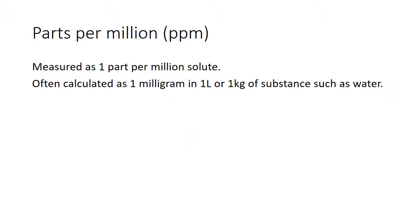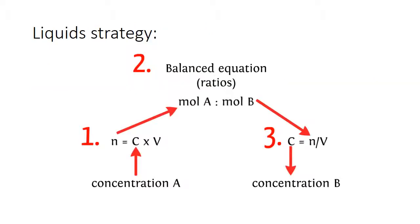Parts per million can also be considered — measured as parts per million of solute, often calculated as 1 milligram per litre or per kilogram of a substance such as water, since 1 kg and 1 litre are interchangeable. Just like for gases and solids, the liquid strategy: use concentration of A, the mole ratio from the equation, then work out the concentration of B from moles divided by total volume.